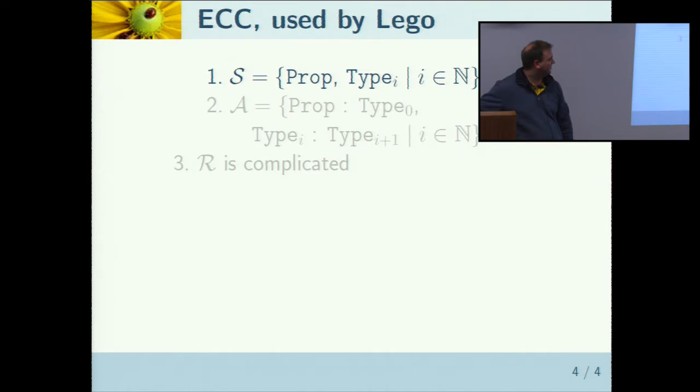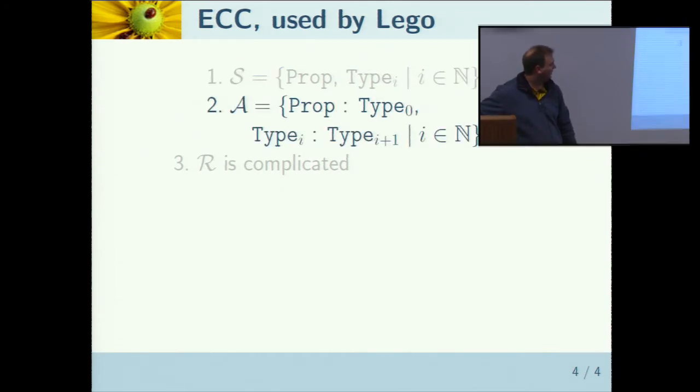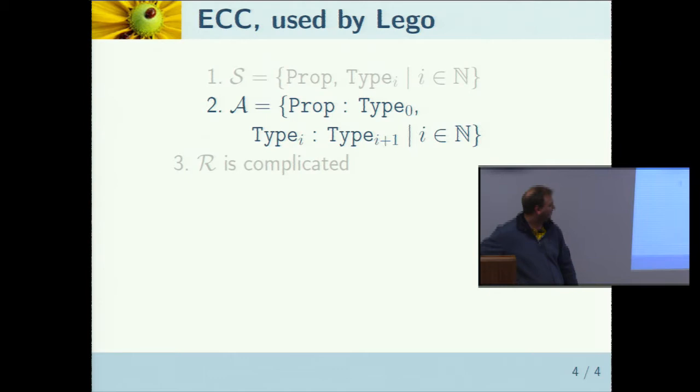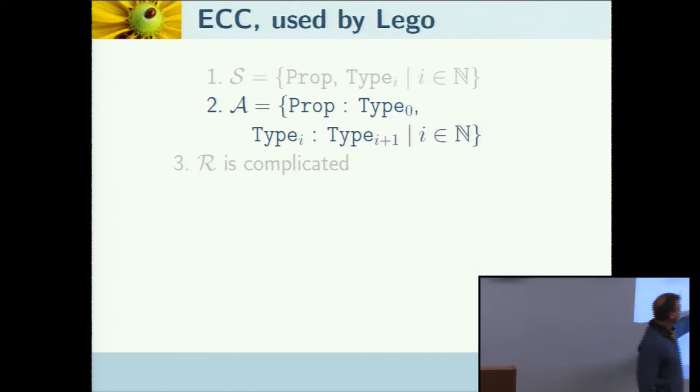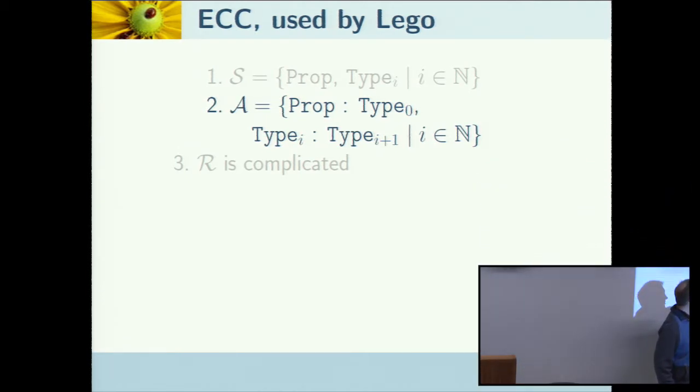The next example is Extended Calculus of Constructions, which is basically a massive expansion of the lambda cube, used by a theorem prover called Lego, which we aren't using much anymore. Basically you can see, it's basically got all the different sorts in a sequence, so basically at each level you can talk about statements at the level before.